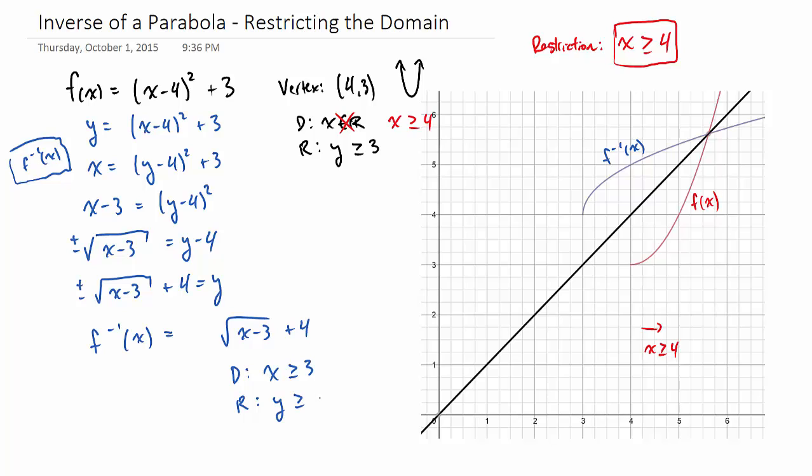So if we look at the domain and range of the inverse, it's actually just reversed from our original function. Where x is greater than 4, y is greater than 3, now x is greater than 3, and y is greater than 4. Once again, we see a little bit of swapping of the points where 4, 3 on the original turned into 3, 4 on the inverse.